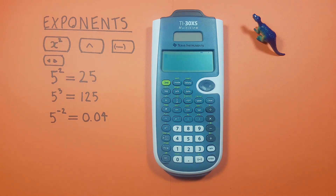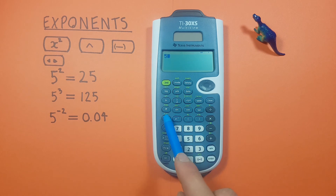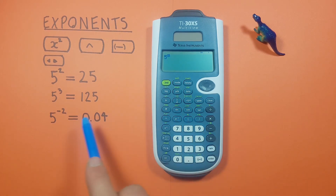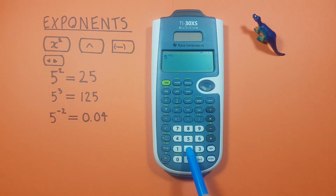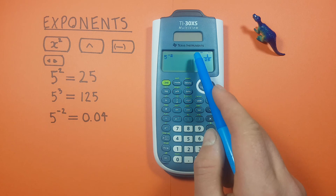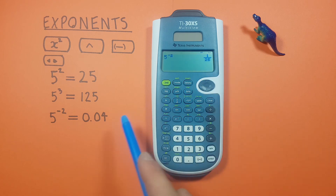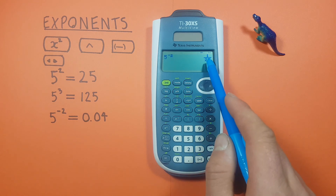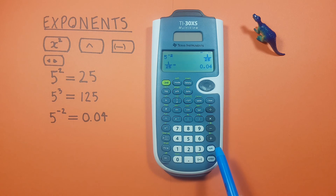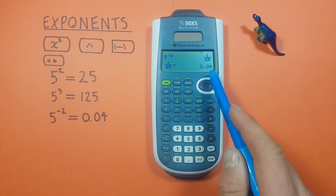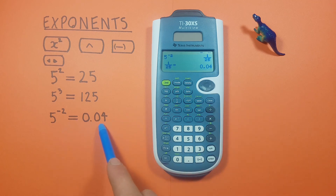If we want to do negative exponents we use the negative key. So for 5 to the power of negative 2, we use the caret key starting with 5, then since this is a negative number we use the negative key first — you see the negative sign — press 2 and enter. Your calculator might give you a fraction initially, but if we want it in decimals we use the toggle key located here. Pressing it, we see 1 over 25 is equal to 0.04, which is correct.